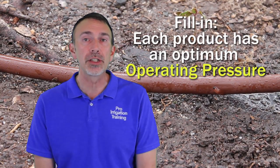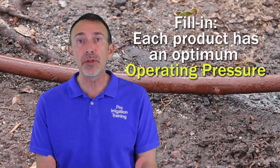So generally each product is going to have an optimum operating pressure. Look at the technical specifications for whatever product you're about to purchase and then match your filter and pressure regulation to what that particular product of drip irrigation needs.